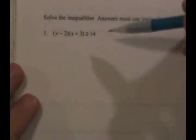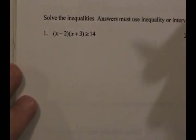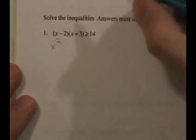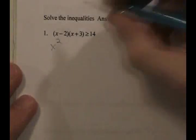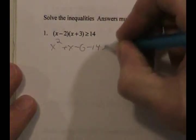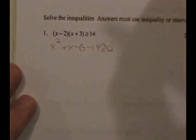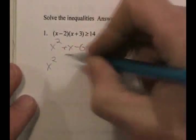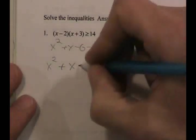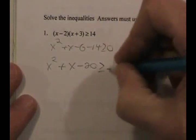Here come the answers to the review sheet. We have a bunch of inequalities on the first page. For the first one, you want to multiply everything out and make sure that there's a zero on one side of the inequality sign. We're going to multiply this out and get x squared plus 3x minus 2x, which is plus x, minus 6, minus 14, greater than or equal to zero.